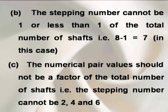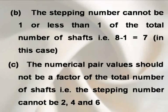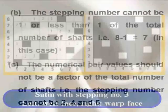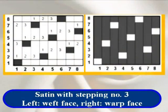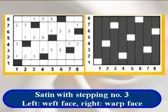C. The numerical pair values should not be a factor of the total number of shafts. For example, the stepping number cannot be two, four, and six. In an eight end satin weave, eight shafts can only be produced in two ways. For example, when the stepping number is either three or five.